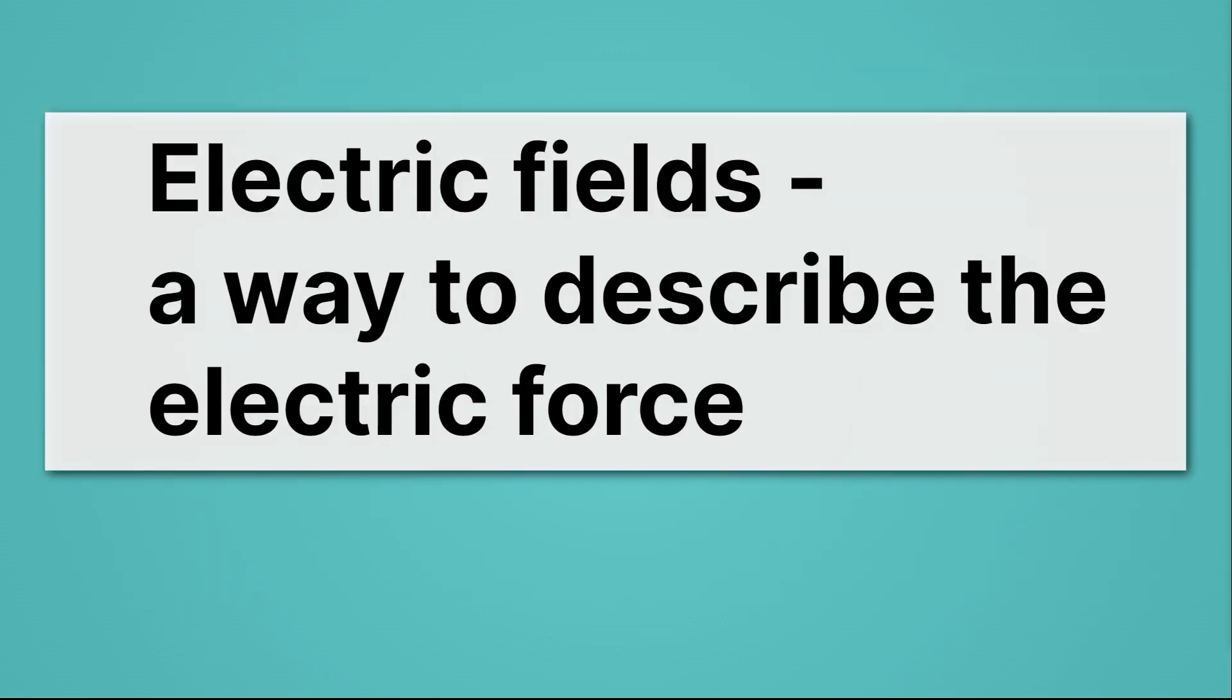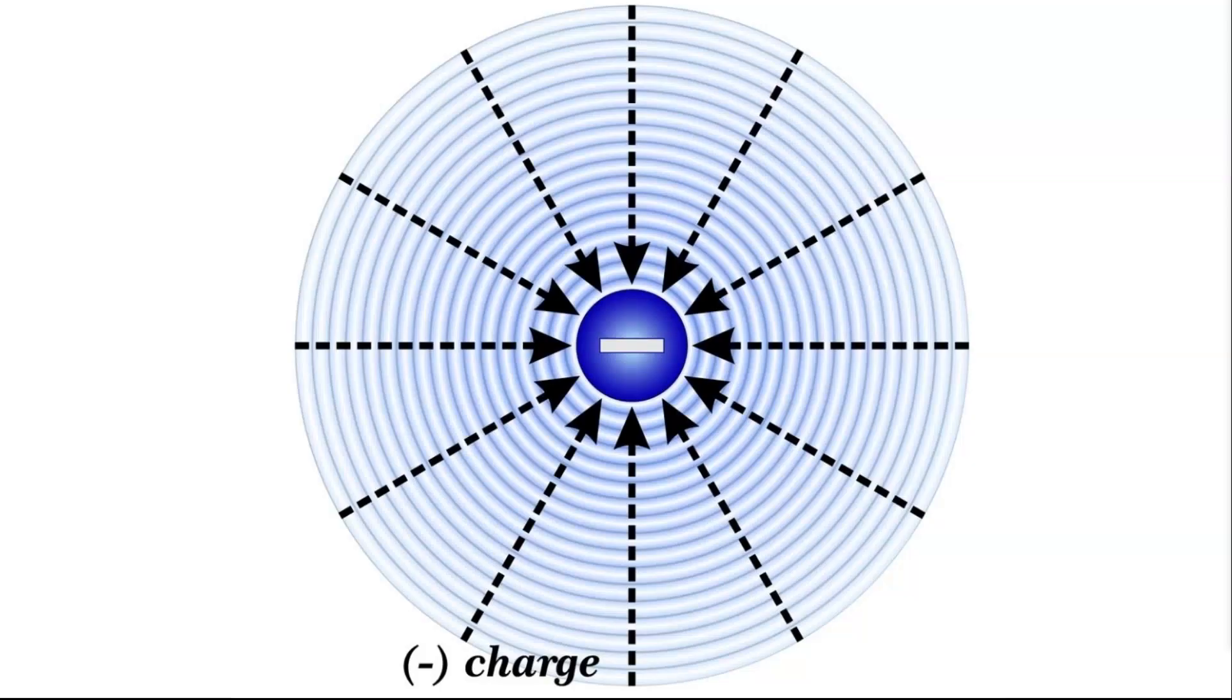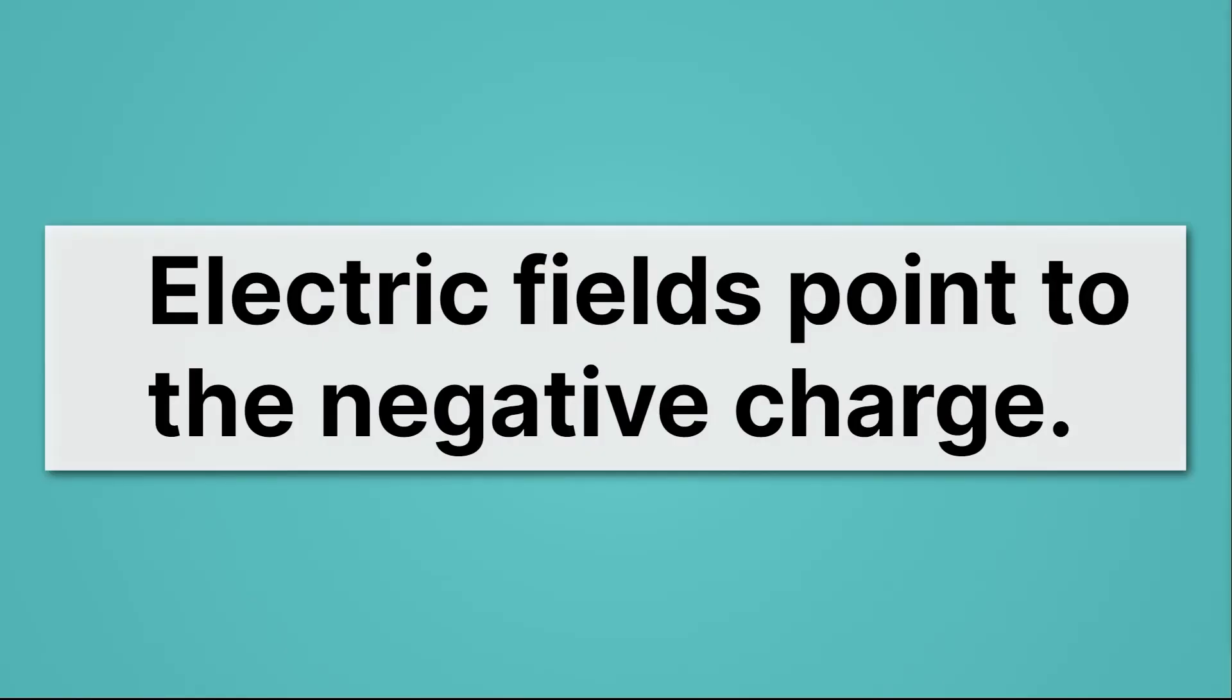Electric fields are a way to describe the electric force. For example, here is a negatively charged particle. Maybe it's an electron. And all around it, we see these black arrows pointing towards it. That's telling us the direction the electric field points. And it always points to the negative charge. So remember, electric fields point to the negative charge.